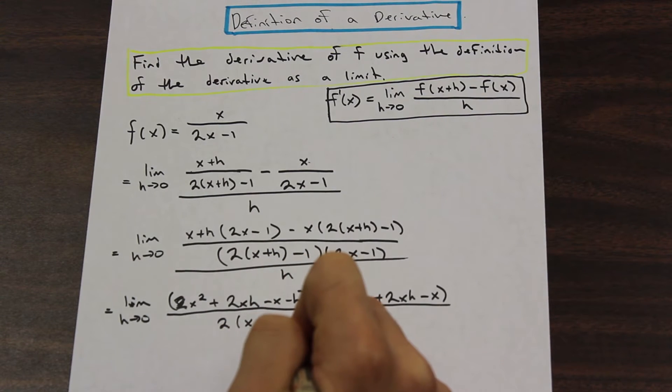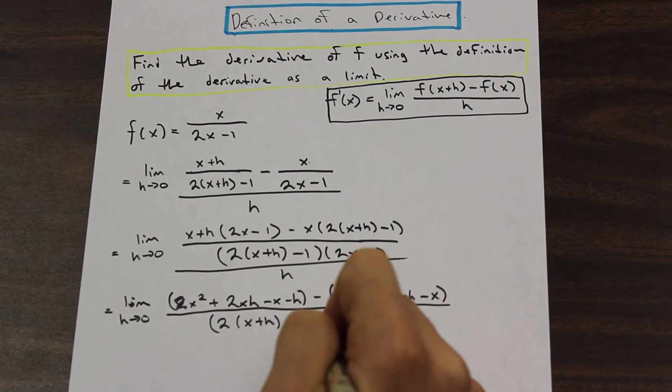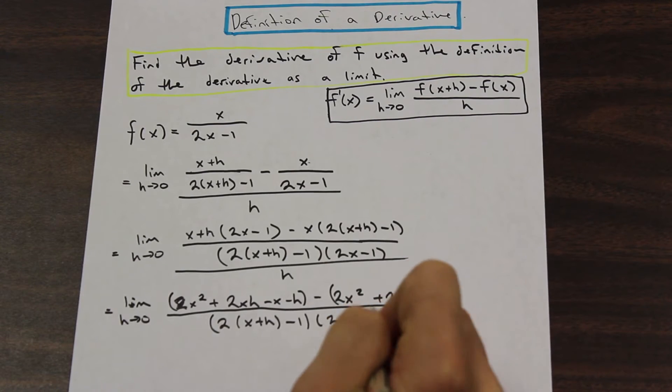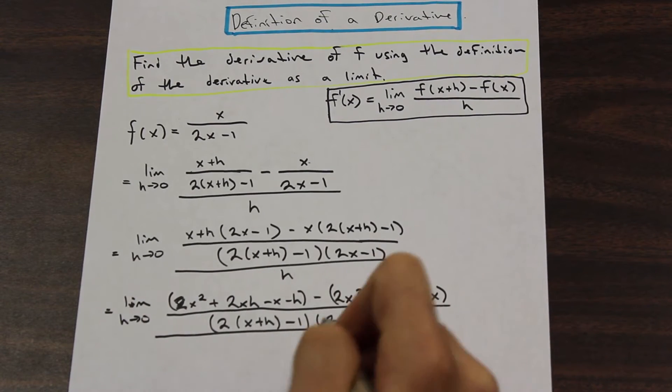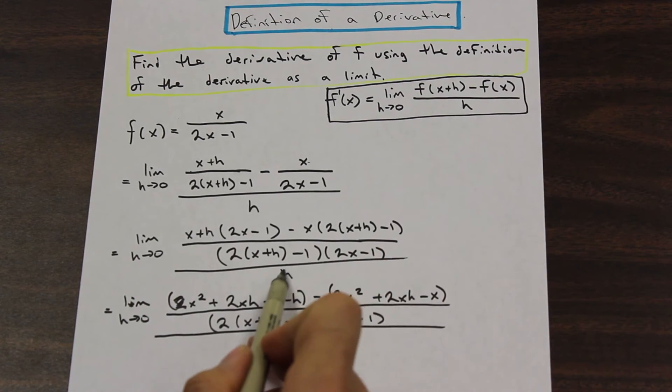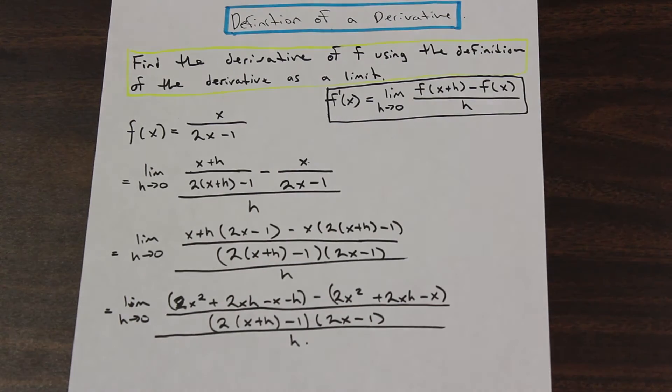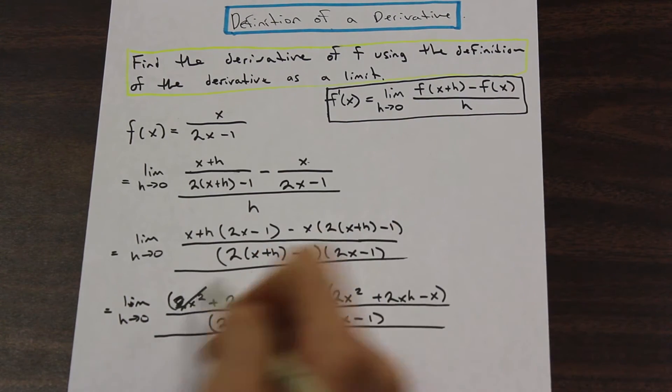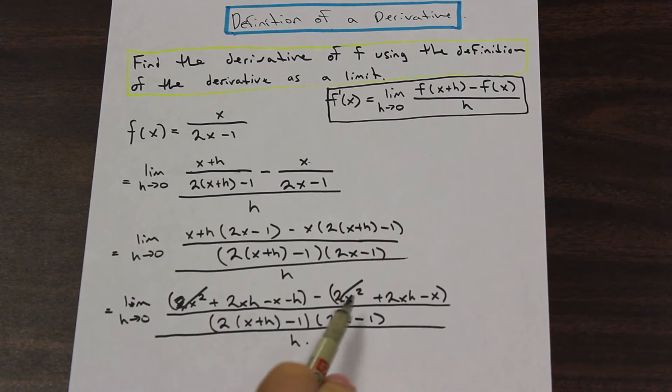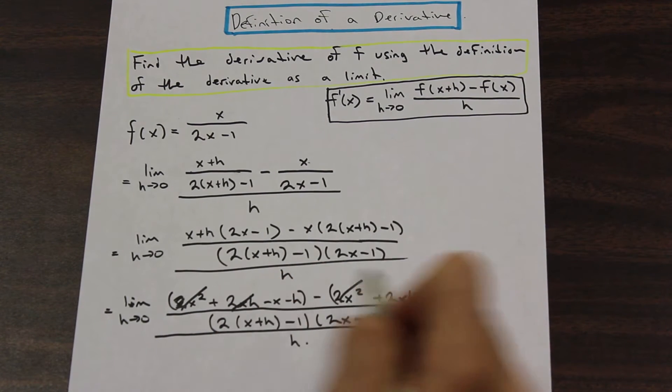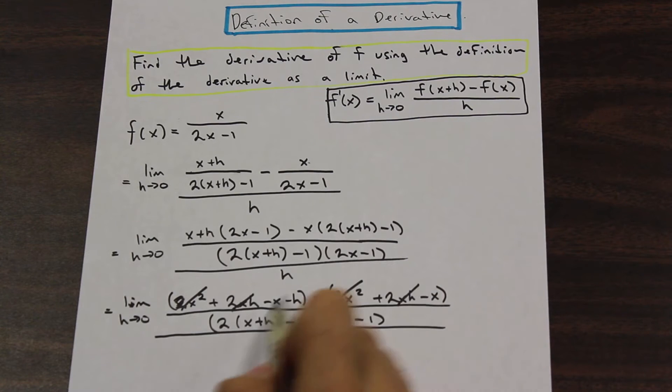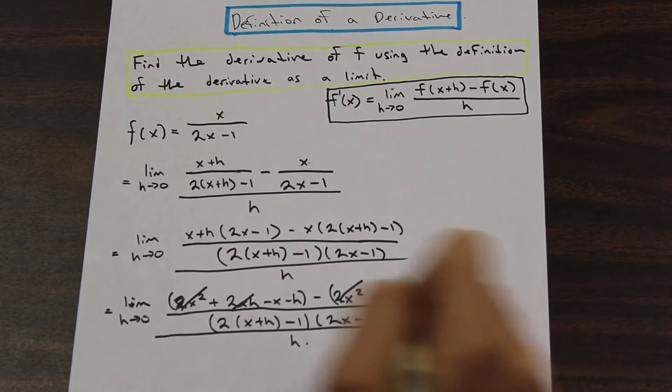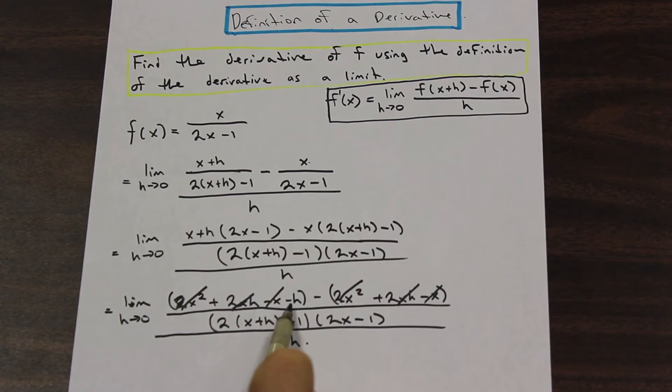And I am just going to continue. The denominator is unchanged thus far. And this denominator of the entire fraction is also unchanged. And as we can see, we can start to cancel some of these terms on the top. Actually, most of it cancels. So 2x squared cancels. 2xh cancels. And we have x minus minus x. That's going to cancel. And we're left with minus h on the top.